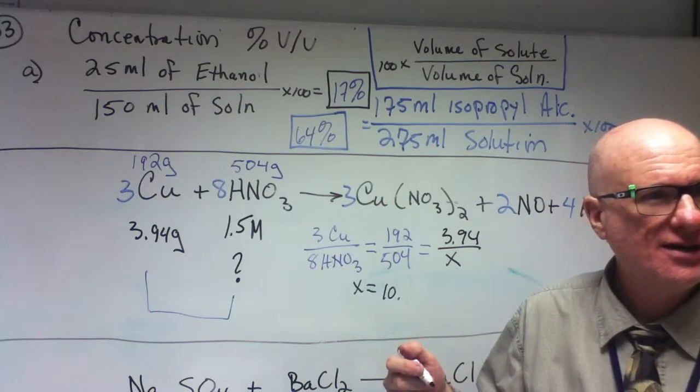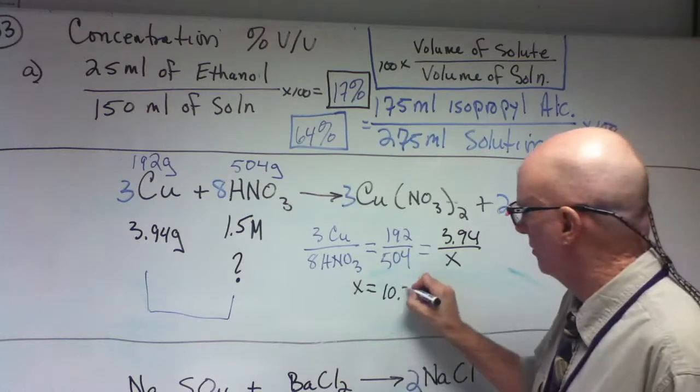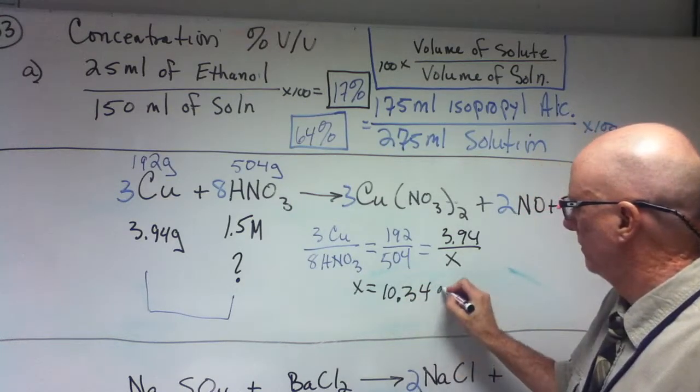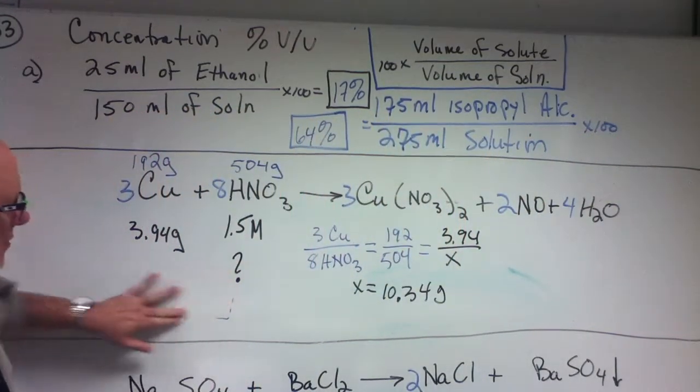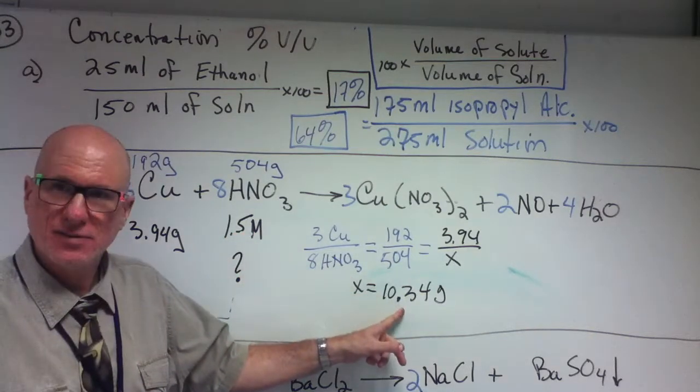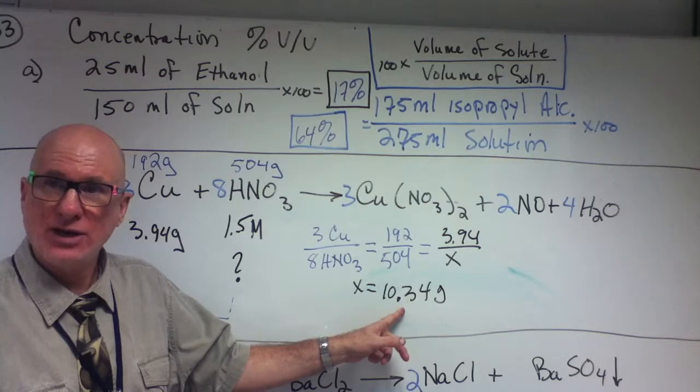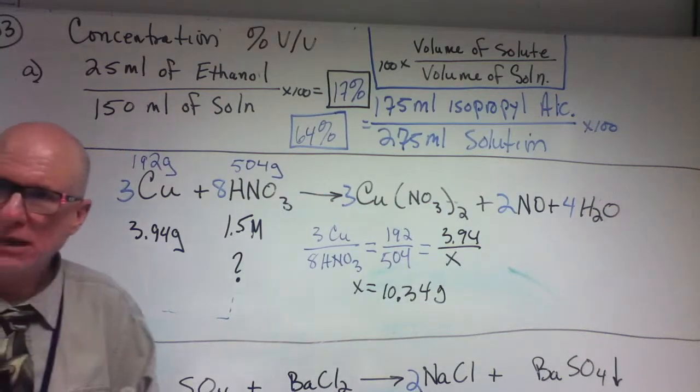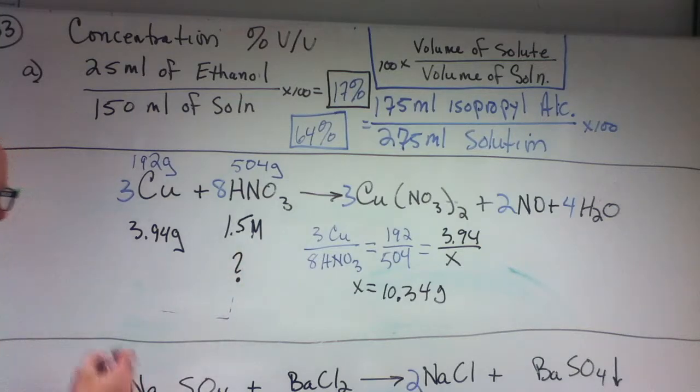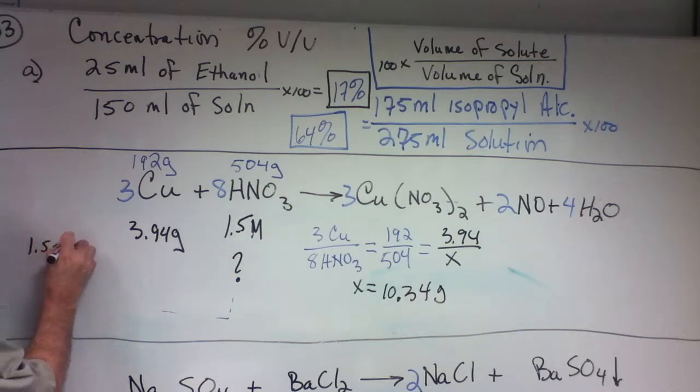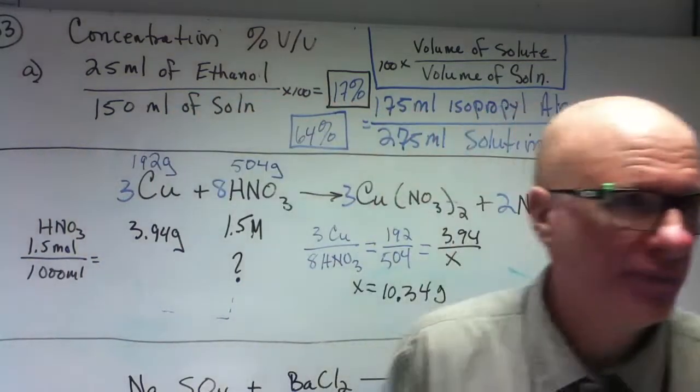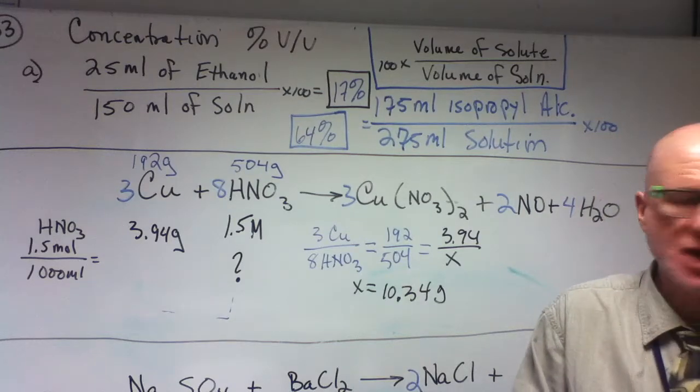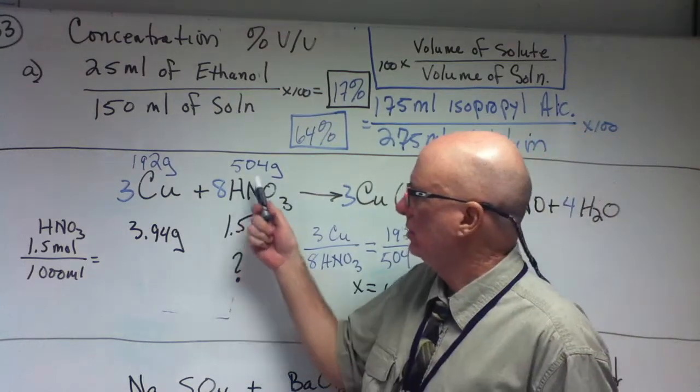So the question is this. What volume of this contains this? Right? So what would I do? I would say, well, easy, right? I know that I have 1.5 moles of HNO₃ in 1000 milliliters, right? Don't I know that? Yes.